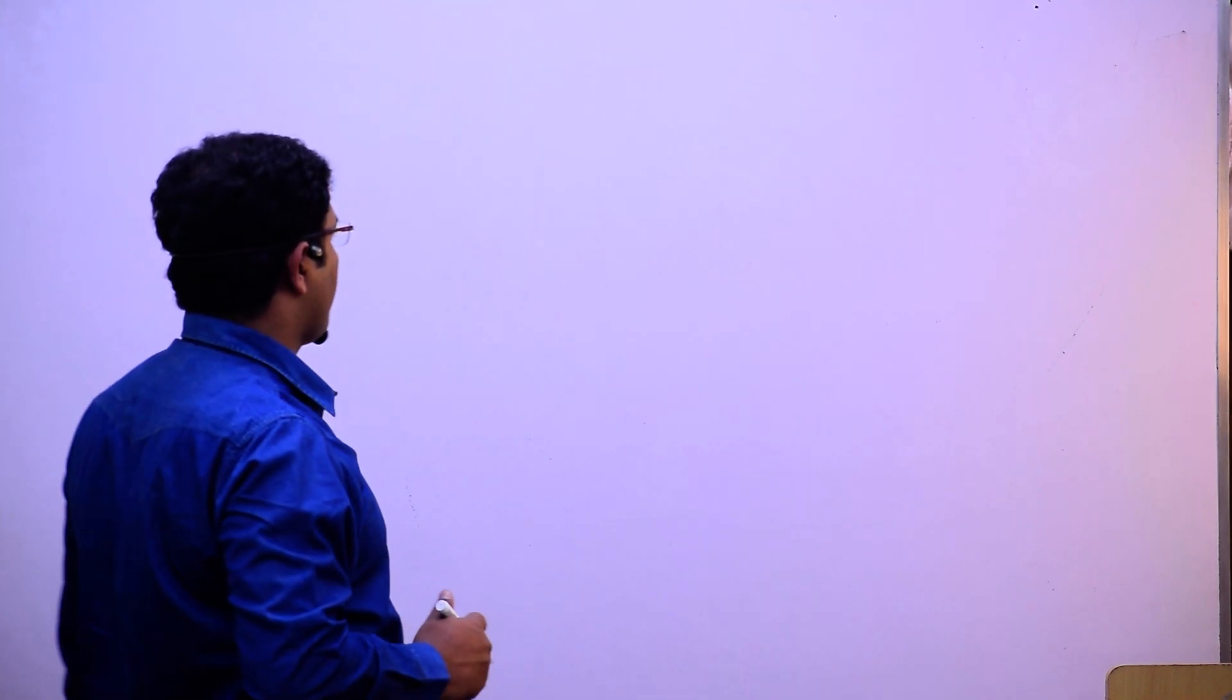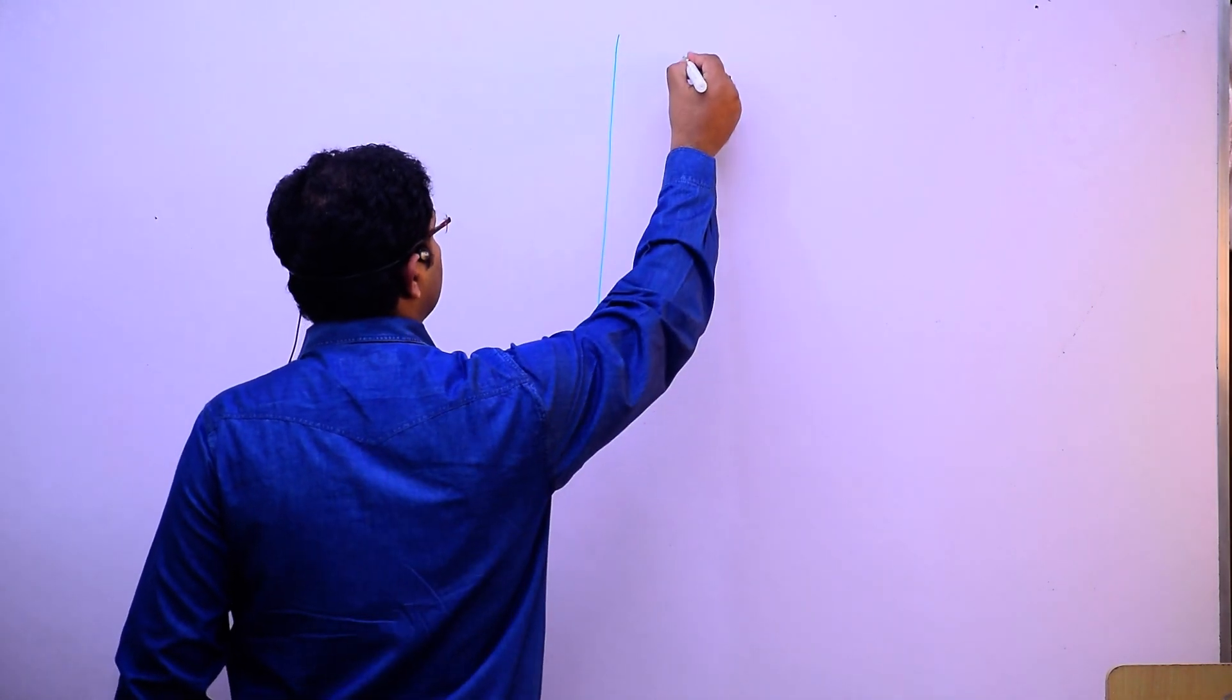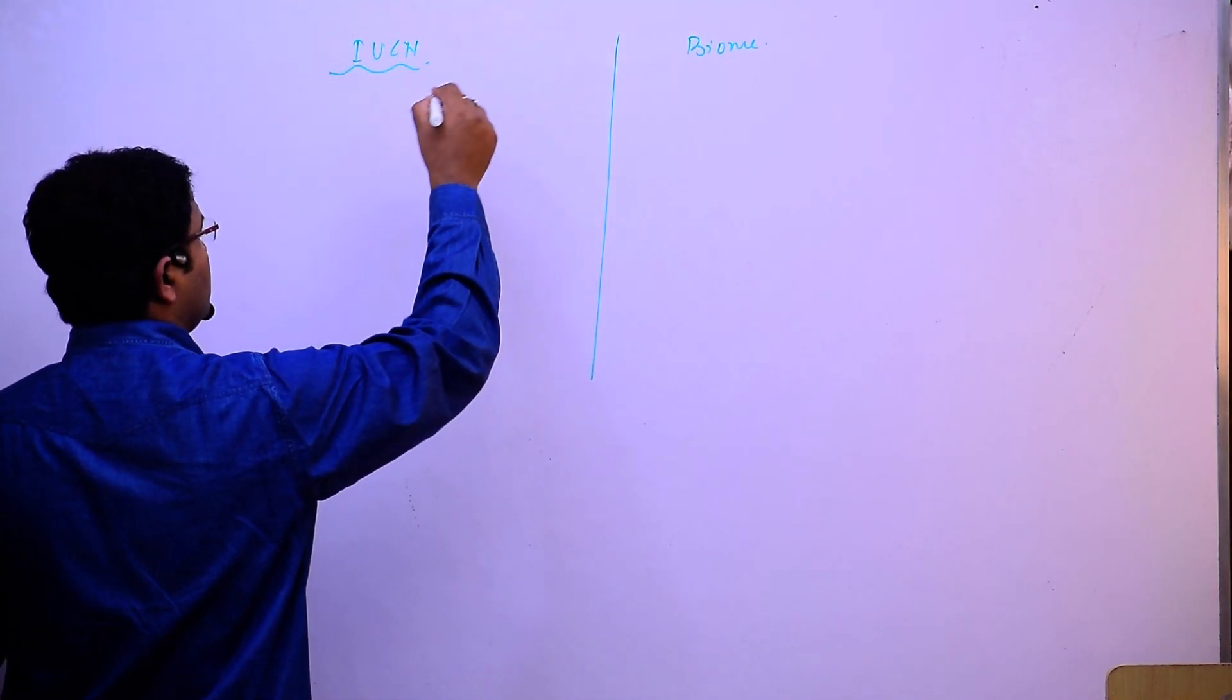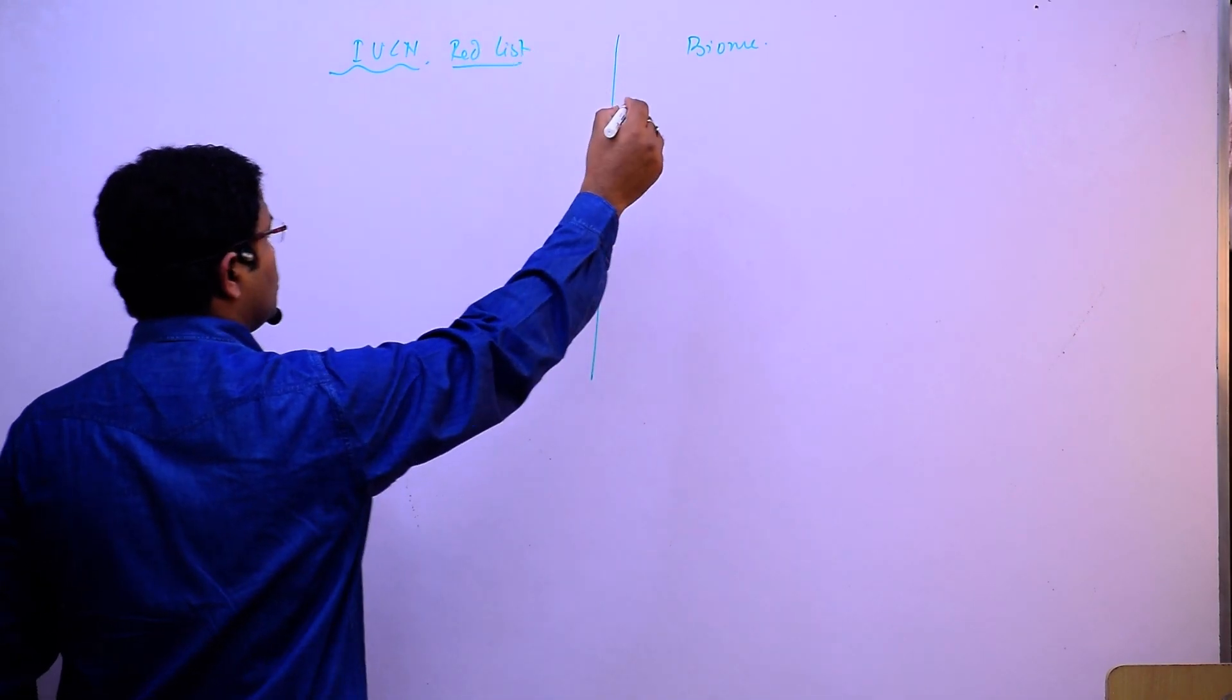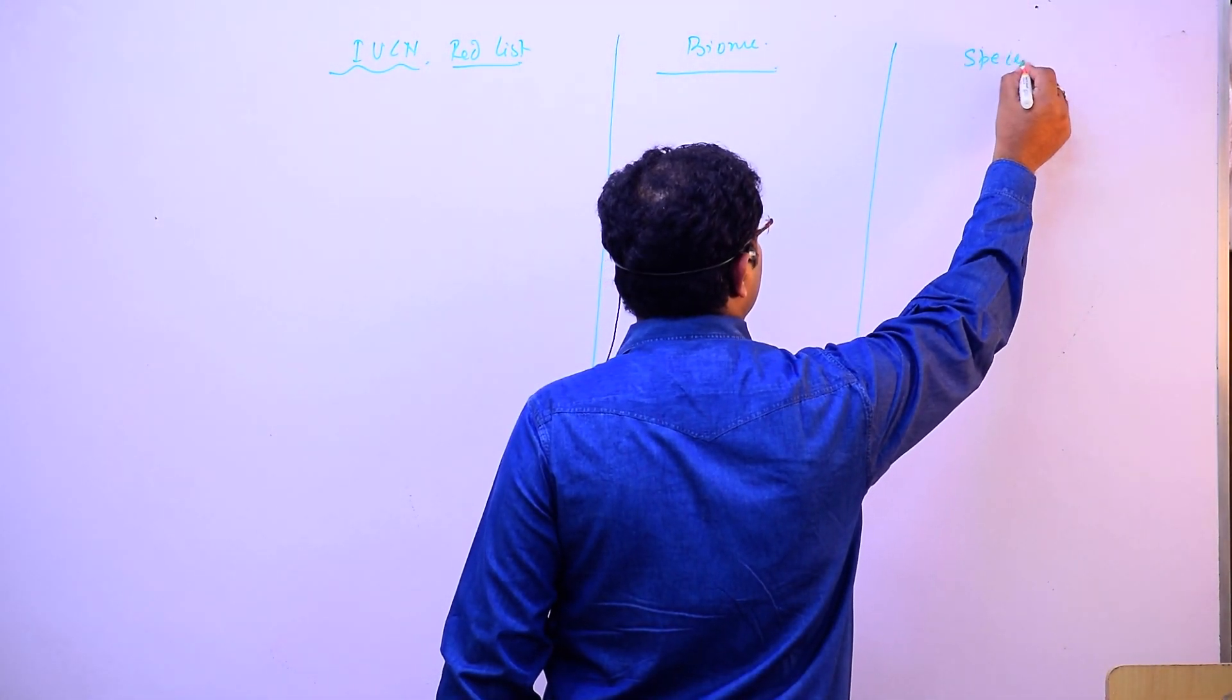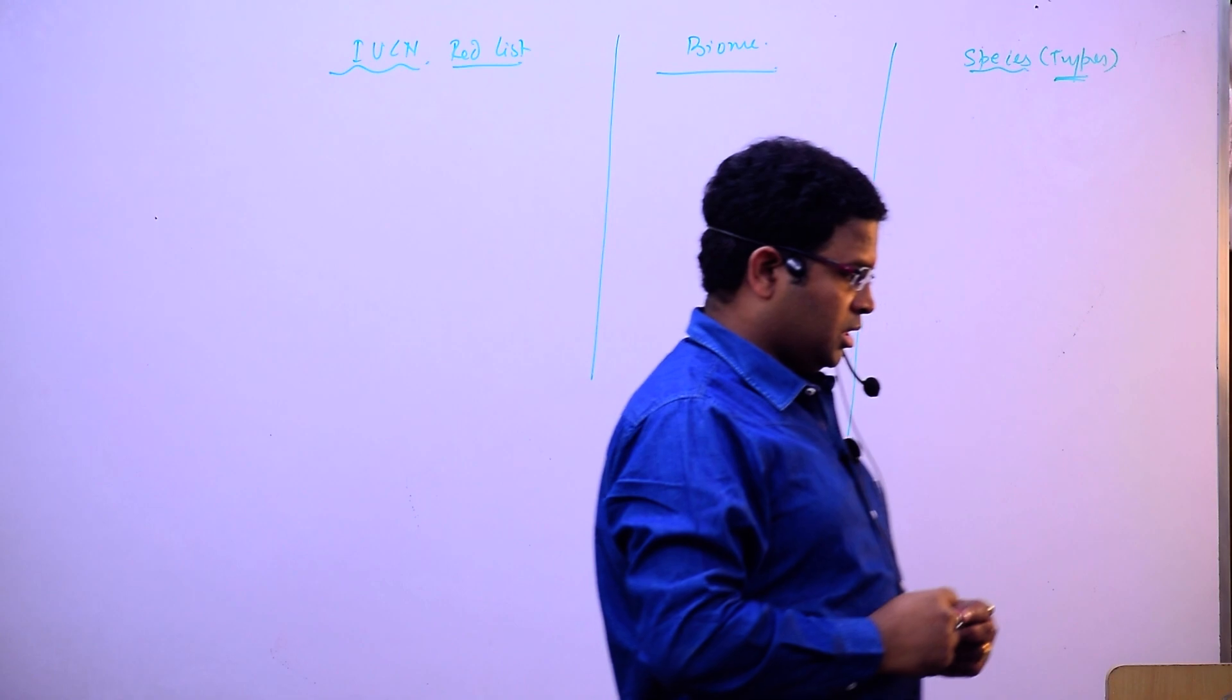The most important questions come from biomes and another section from IUCN Red List. These two important parts, and then some species-based types - these are the areas that UPSC is asking questions from.